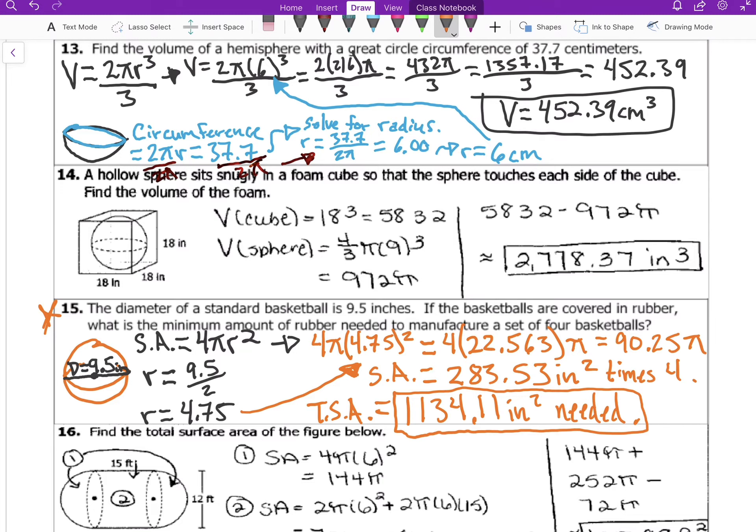Here we plug it in. R is equal to 4.75 because half the diameter of 9.5 is 4.75. Plug it in, you get the mathematical magic going on there, get that process, and then you get a surface area of 283.53 inches squared. Now we have to multiply it times 4, so then our total surface area is 1134.11 inches squared needed to make four basketballs out of rubber.